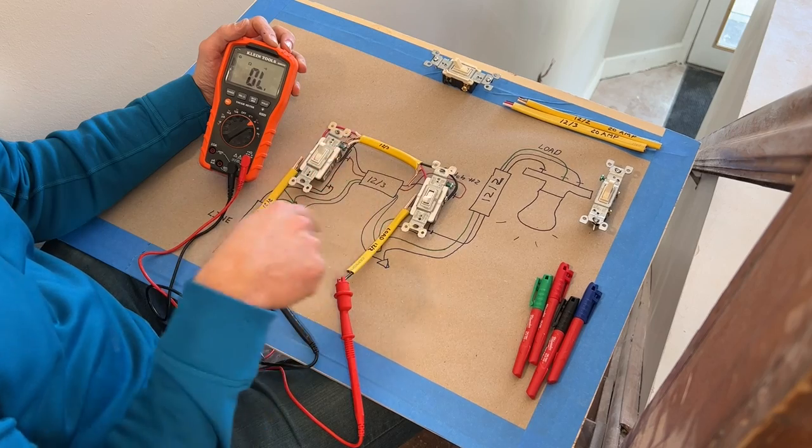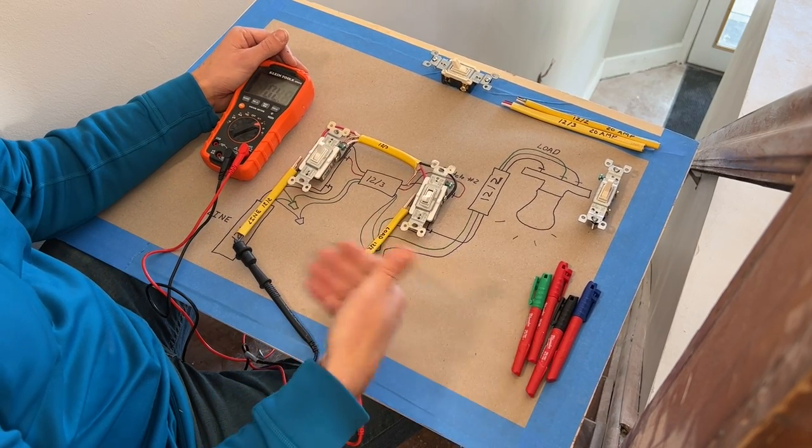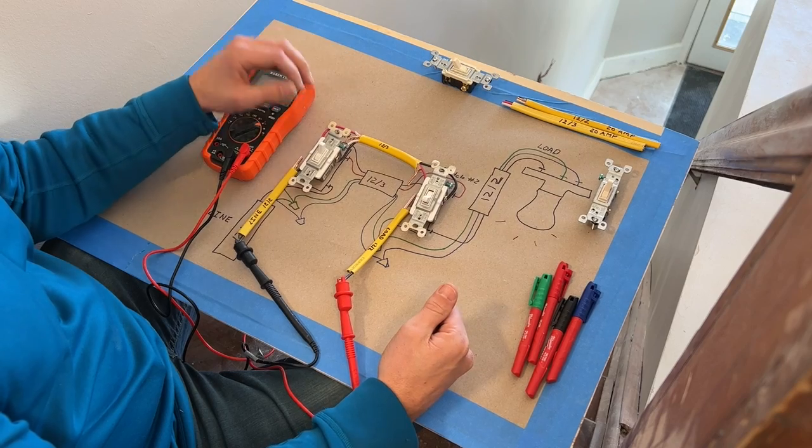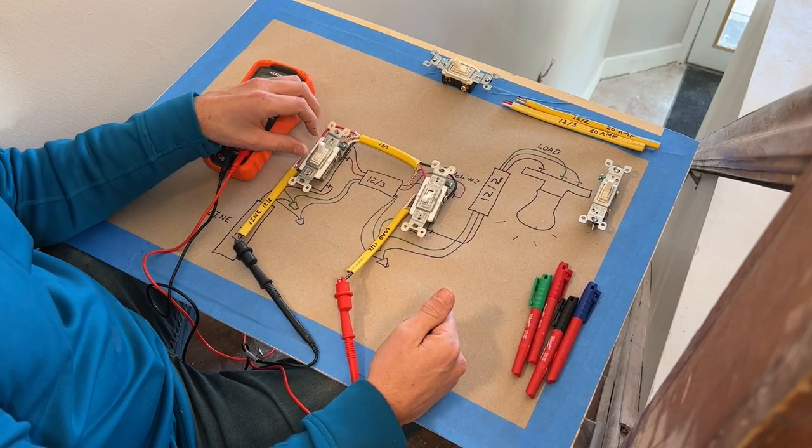When the multimeter now set to the continuity setting or set to resistance with an audible alarm, when it picks up resistance or a completed circuit, it will give you an audible alarm, and that would represent when your light is turned on.